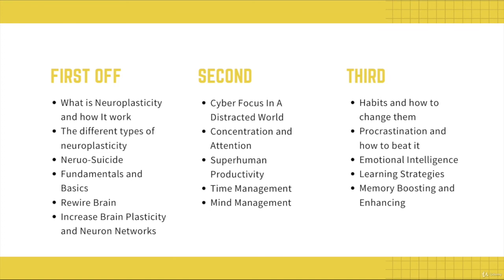We're going to talk about habits and how to change them, the concept of procrastination and how to beat it. Habits equal repetition and consistency, and repetition and consistency ensures proper brain plasticity and flexibility. Procrastination is one of the biggest enemies when it comes to brain plasticity — every time you procrastinate, your brain is trying to wire something into your neural system, but procrastination cuts this chain, causing you to fall back and weaken the neural structure you're working on.